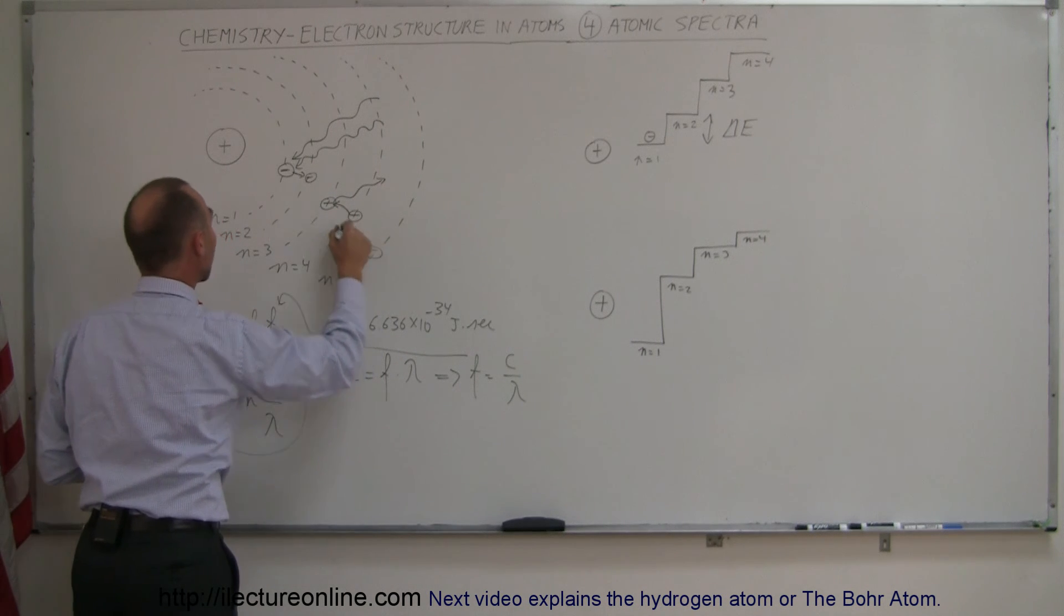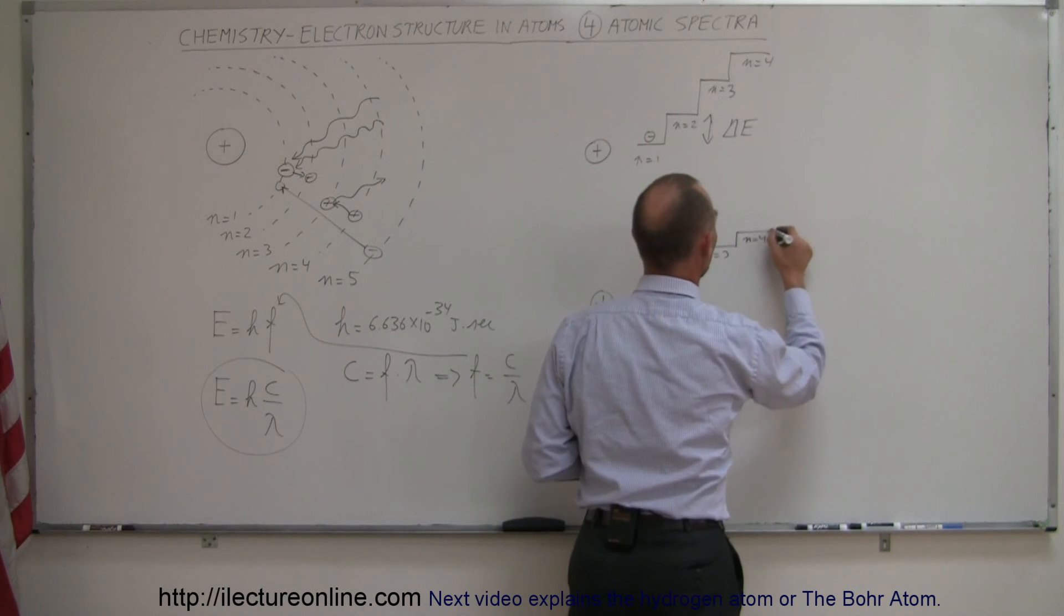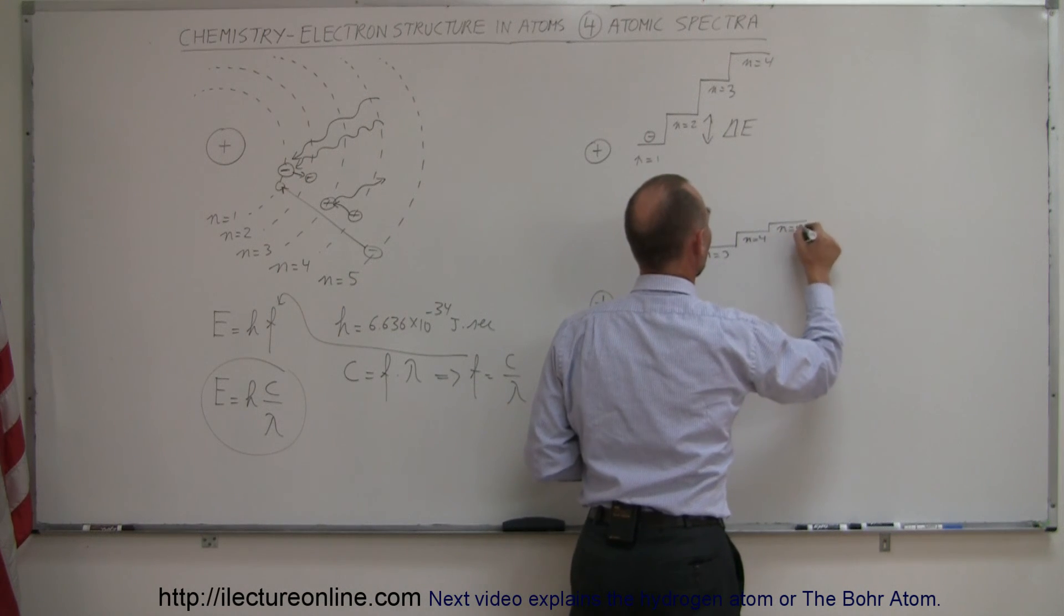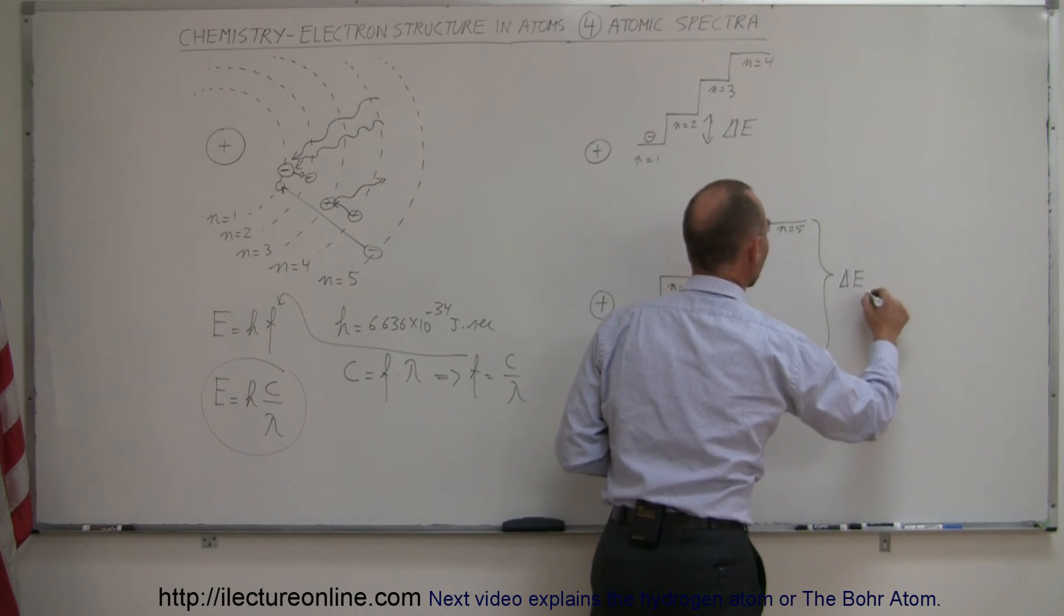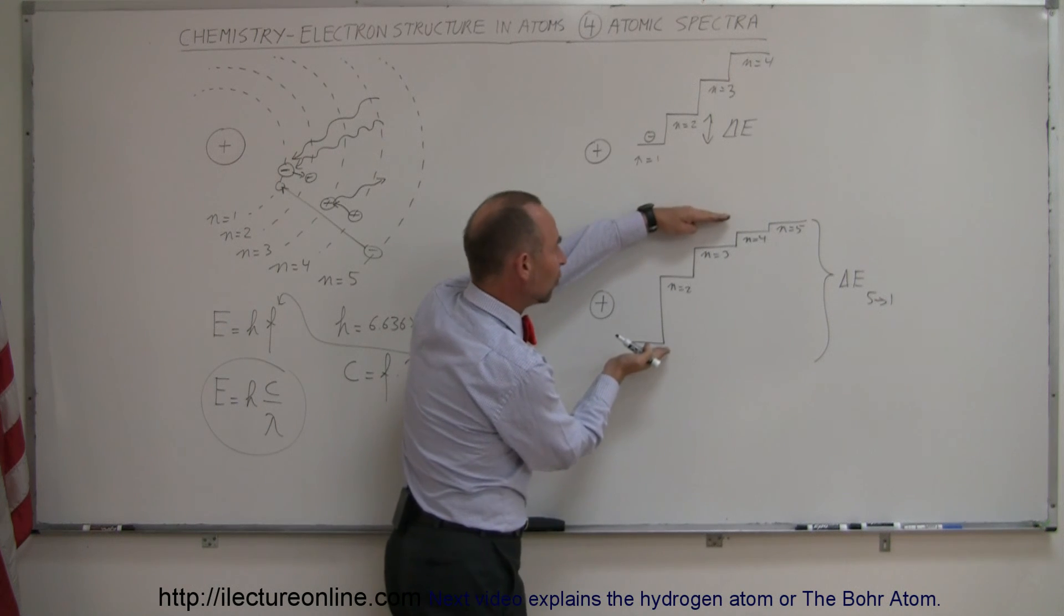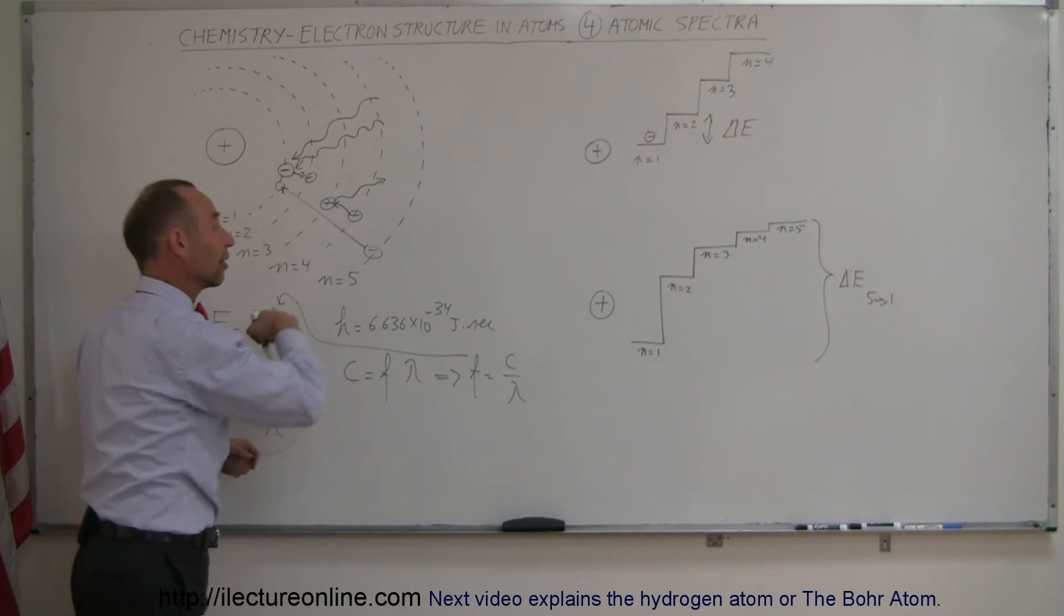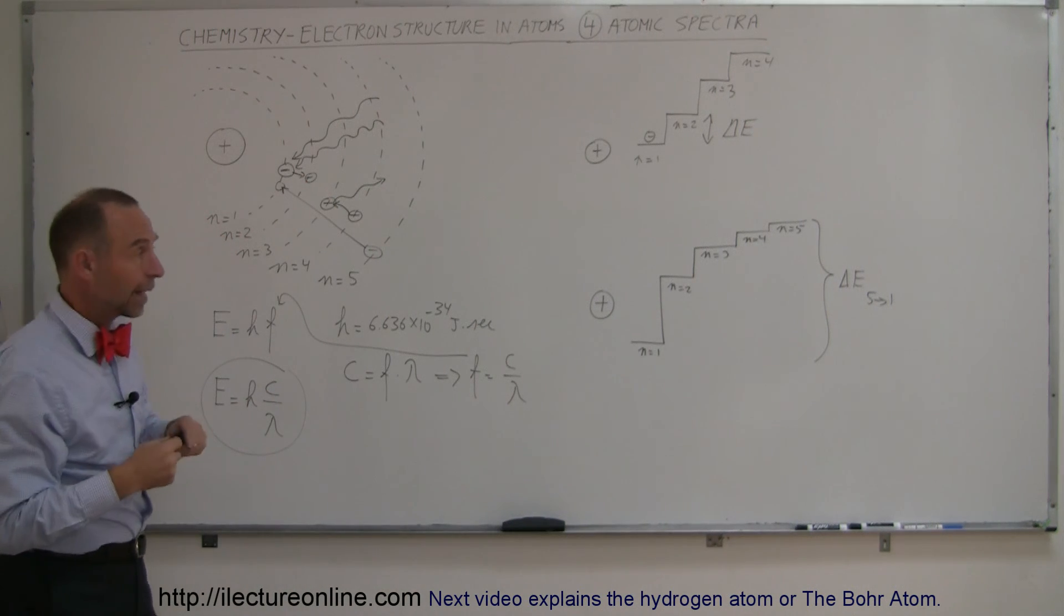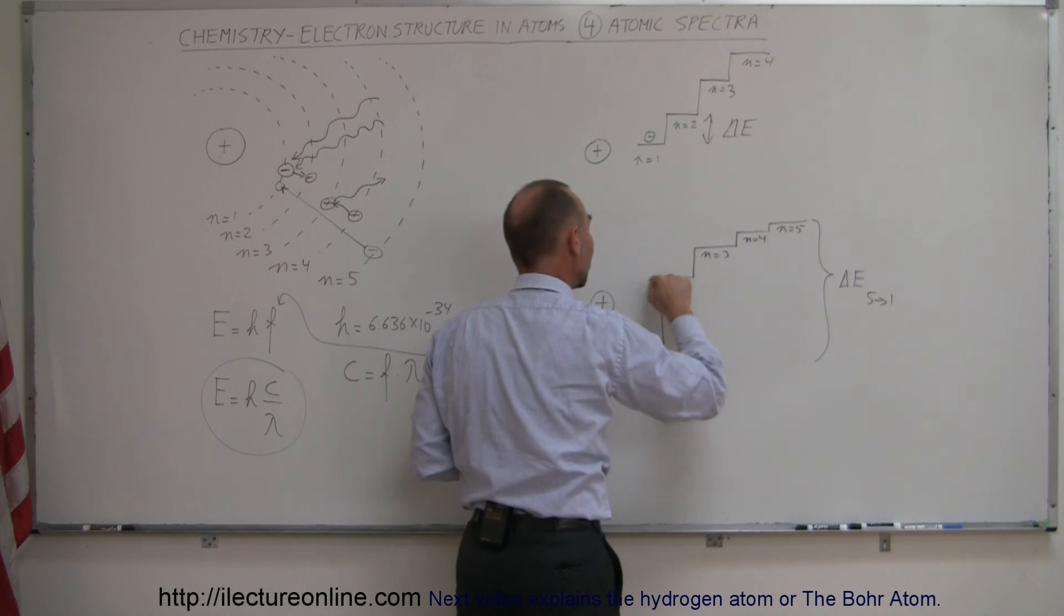For example, an electron can jump from the fifth level all the way down to the first level. And, of course, if this is N equals 4 and this is N equals 5, and this represents the delta energy from 5 to 1, a photon with exactly this amount of energy will be emanated from that electron as it jumps back down to the first level all at once. What happens if an electron jumps from the fifth level to the fourth, to the third, to the second, down to the first?